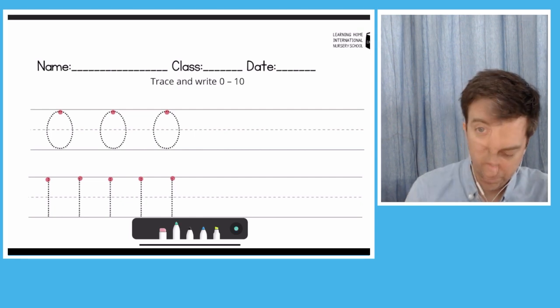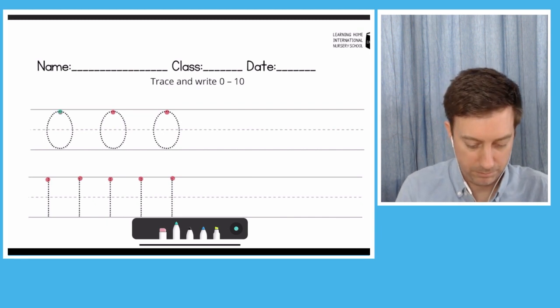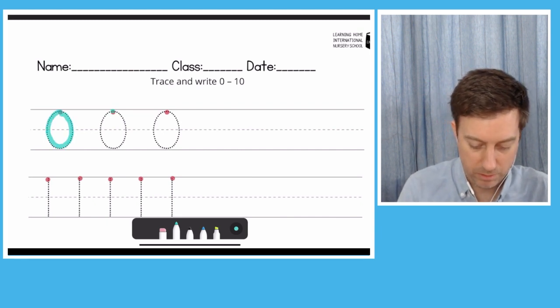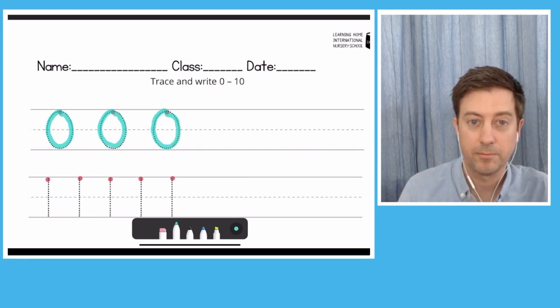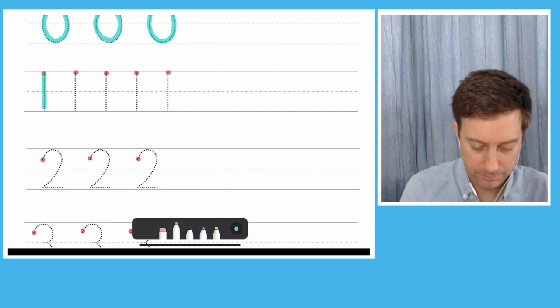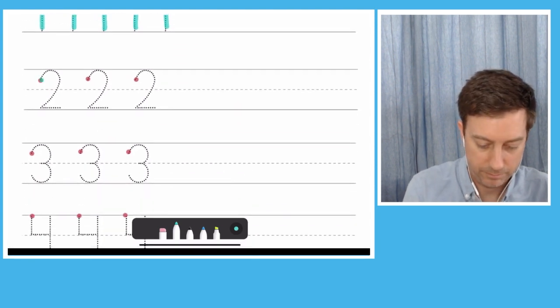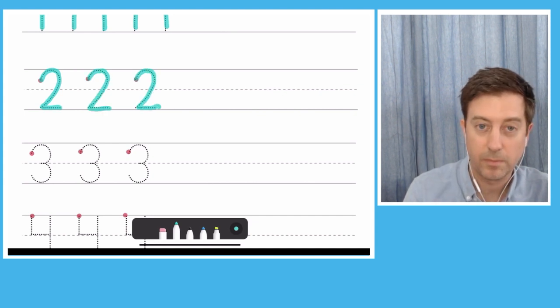First one is zero, starting at the top, going around, going around, going around. Number one, just going down, very simple. Number two, okay.